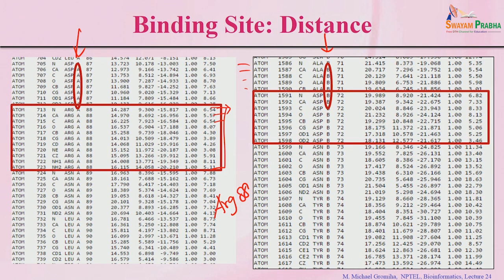Likewise, you can do this for all residues. For example, if you have 100 residues, you get 100 energy values. From these energy values, you can identify the binding sites based on energy.